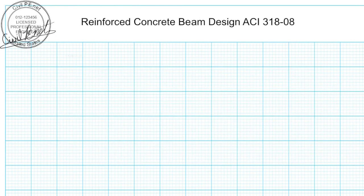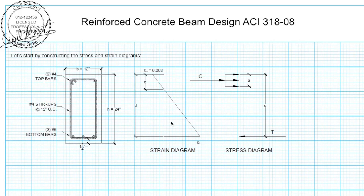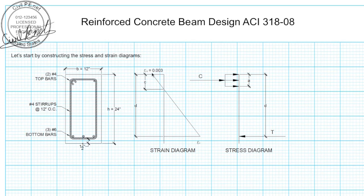These two number four bars near the compression zone are going to be neglected. In reality, considering those as active increases ductility and strength slightly, but it's a conservative assumption to neglect them. Now let's construct our stress and strain diagrams. In the strain diagram, we know the strain in the concrete is going to be 0.003 at failure. We'll soon calculate the depth from the extreme compression fiber down to the center of our tension steel — that depth is known as d. The depth c represents the distance from the extreme compression fiber to the neutral axis.